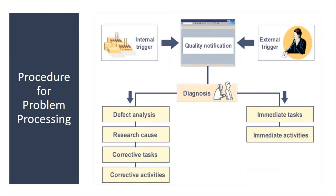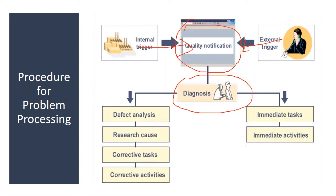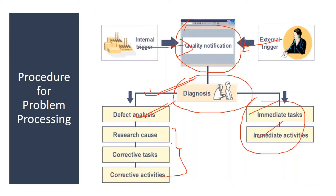They first create a notification, either based on external reasons — either from vendor or customer — and also from production activity. Then you analyze the problem. What immediate tasks and activities you are going to do, you document those. Finally, you analyze the defect — why the defect has happened — and then what corrective actions and preventive actions you are going to take. All these things are captured in the notification.